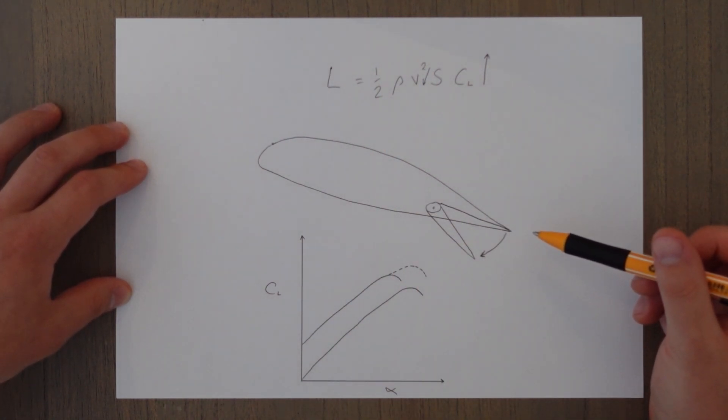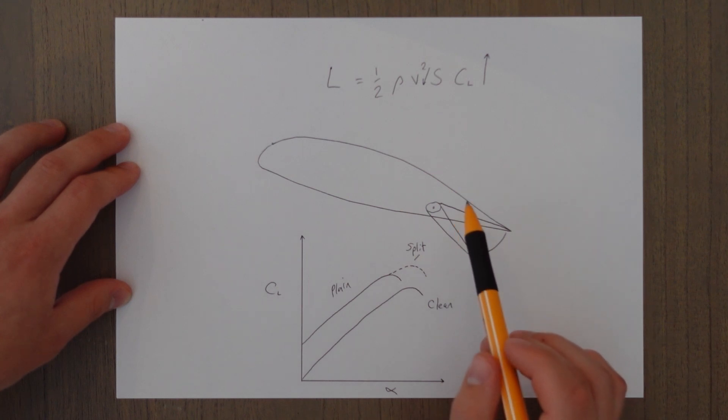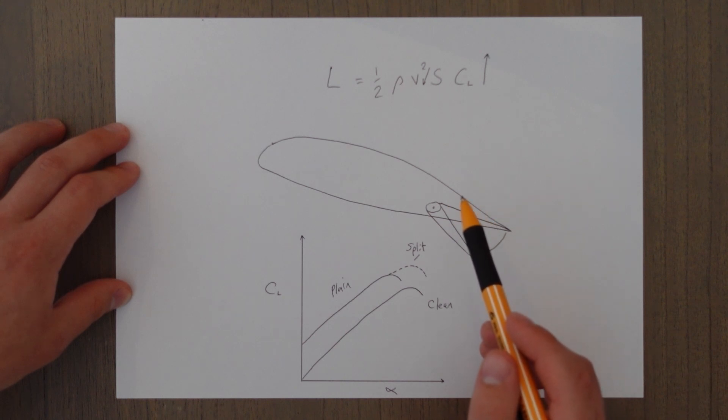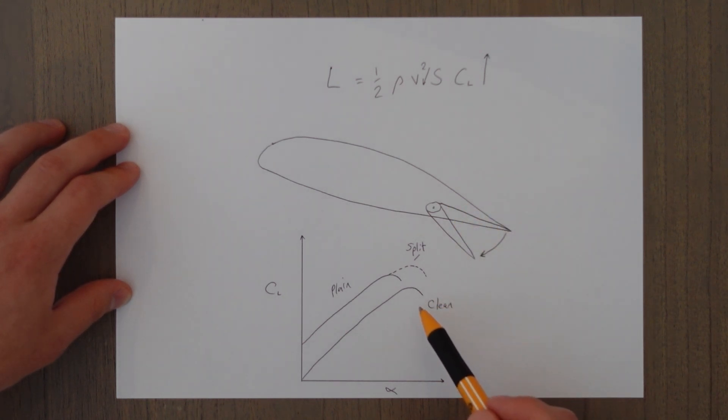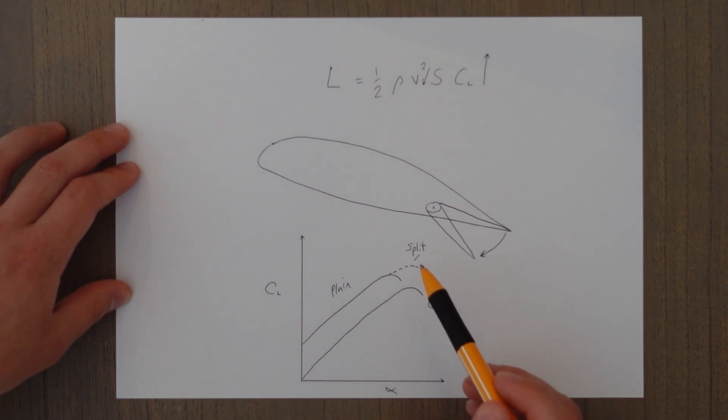Another type of flaps are split flaps. The hinge point on a plain flap causes disruption to the airflow on the upper surface and actually leads to an earlier separation point than when you're in a clean configuration. As you can see from this diagram it actually separates at an earlier angle of attack in a clean configuration. A split flap basically hides this hinge on the bottom surface and that hiding of the hinge means that the airflow isn't disrupted and it allows us to get to a higher angle of attack than a plain flap.